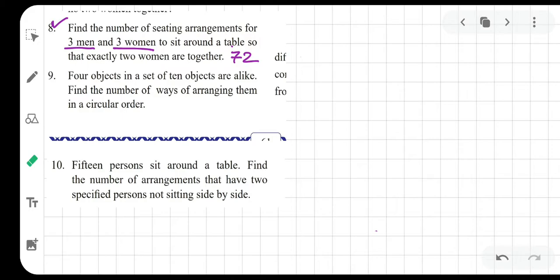Find the number of ways of arranging them in a circular order. Simple. First, how many objects are there? Ten. In how many ways can they be arranged? 10 minus 1 factorial, that is equal to 9 factorial. But from those, four objects are the same, so divide by 4 factorial. So 9 factorial upon 4 factorial is the answer for the ninth question.